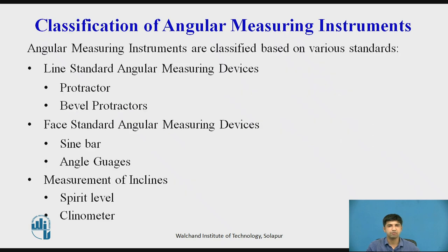Angular Measuring Instruments are classified based on various standards. Line Standard Angular Measuring Devices give direct angular measurement from the engraved scales on the instruments. They are not very precise and hence are not used when high precision is required. However, they can be used for initial estimation of angles. Examples include the Protector and Bevel Protector.